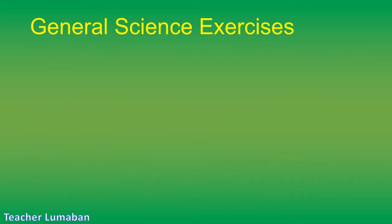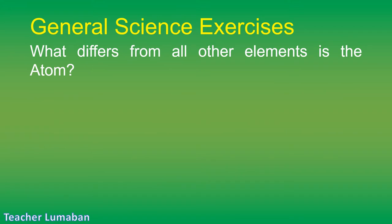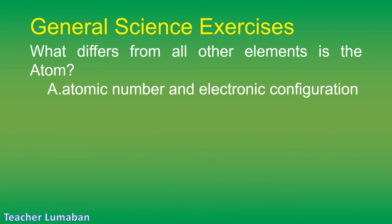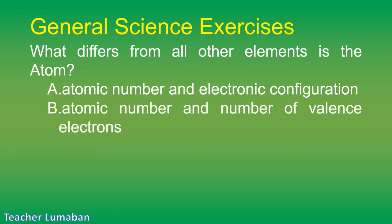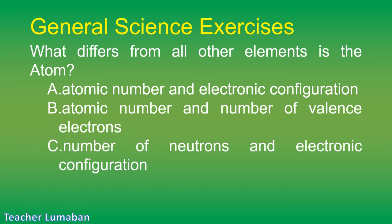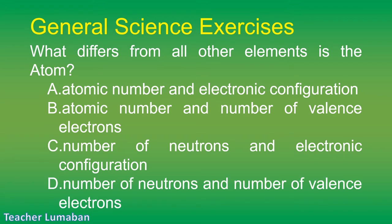What differs an atom from all other elements? Letter A: atomic number and electronic configuration. Letter B: atomic number and number of valence electrons. Letter C: number of neutrons and electronic configuration. Letter D: number of neutrons and number of valence electrons.